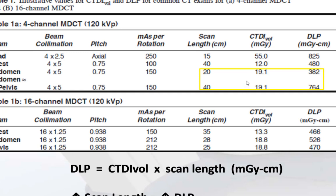Scan length will change the DLP but will not change the CTDI. For example, a CT abdomen has a shorter scan length than CT abdomen and pelvis. CTDI volume remains the same — say 19.1 mGy — but the DLP will double because we have doubled the scan length. So DLP equals CTDI volume times scan length, and increasing scan length will increase DLP and therefore increase the effective dose.